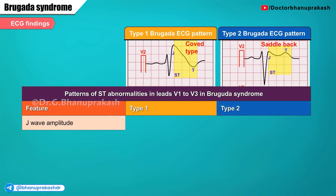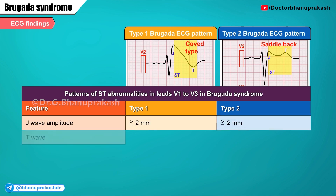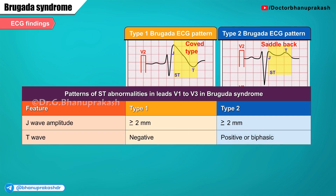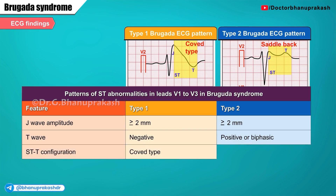Patterns of ST abnormalities in the leads V1 to V3 in Brugada syndrome: the J wave amplitude is at least 2 mm or more in both type 1 and type 2. There is T wave inversion in type 1, whereas a positive or biphasic T wave is seen with type 2. The ST-to-T configuration is a classic coved type in type 1 and a classic saddleback type in type 2.